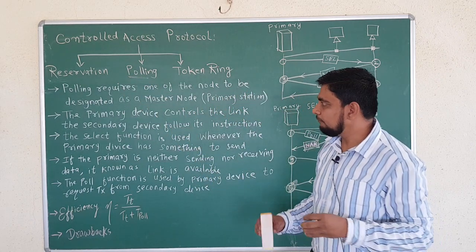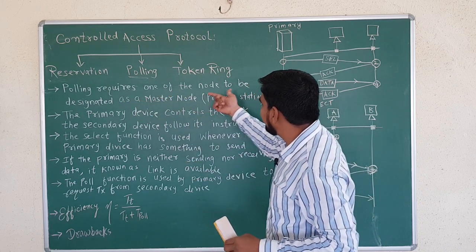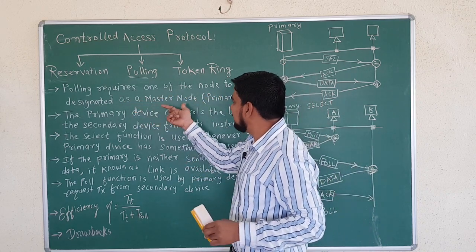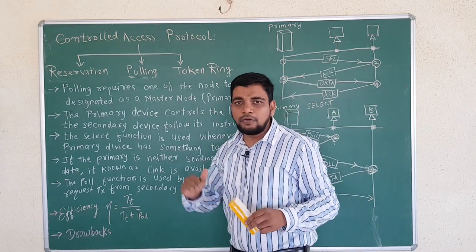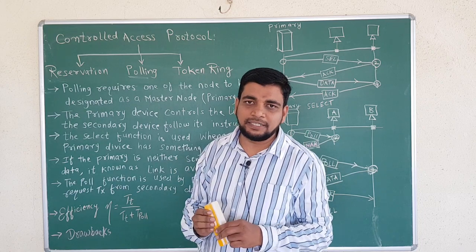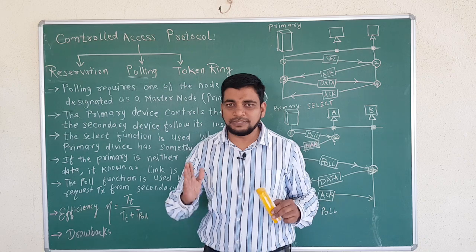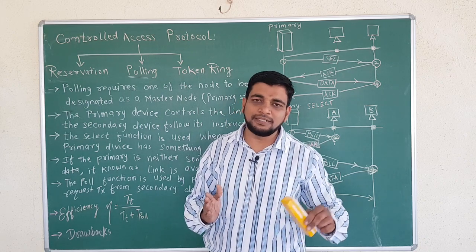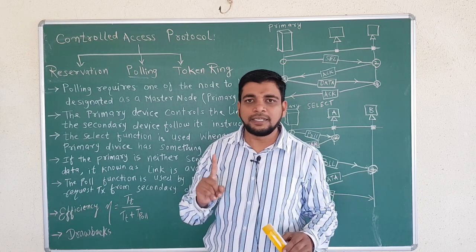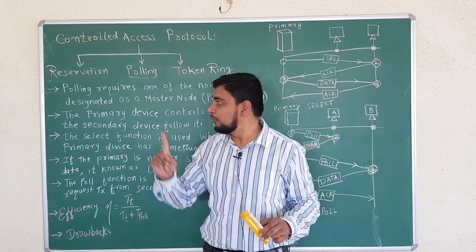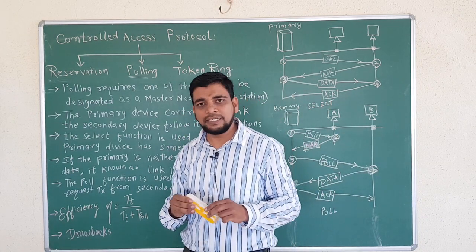What is polling? Polling requires one of the nodes to be designated as the master node, that is the primary node, and all other nodes as the secondary node. In a single topology, the number of nodes are there. This means we decide that this is our primary node, our master node, and all other nodes will be the secondary nodes.